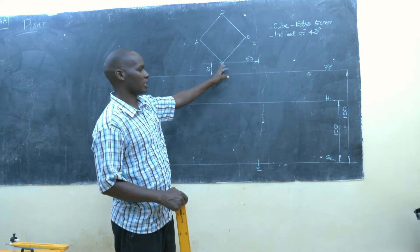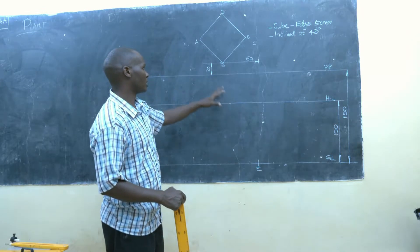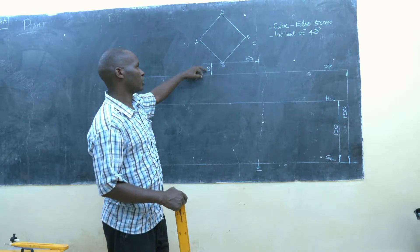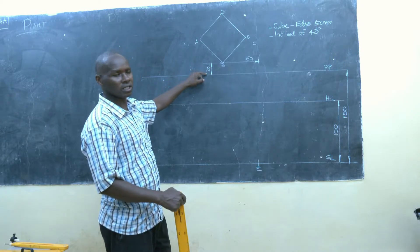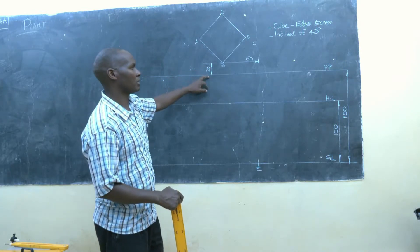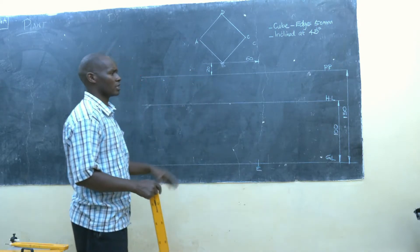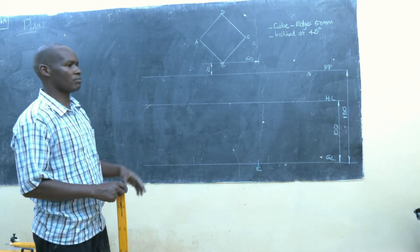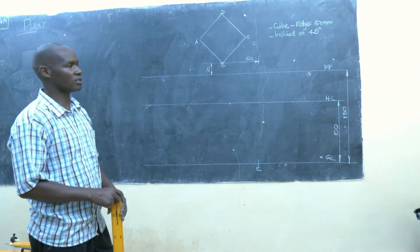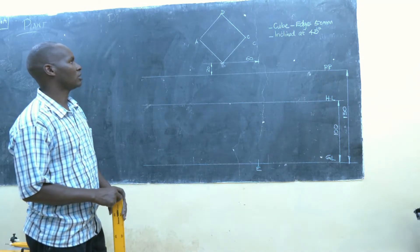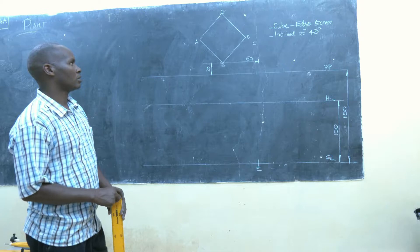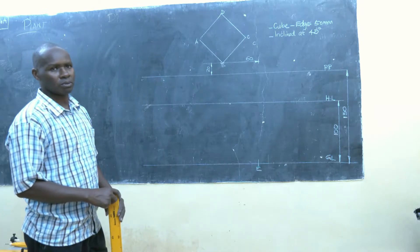And again, 20mm from the picture print. So those are the conditions that you are given to come up with a two-point perspective of a cube.